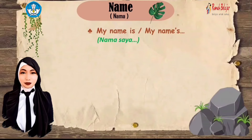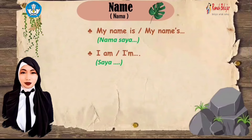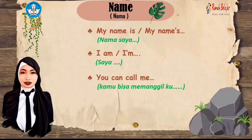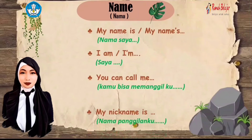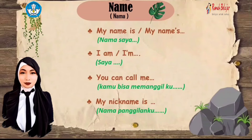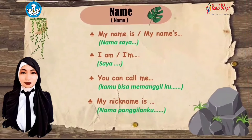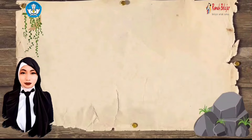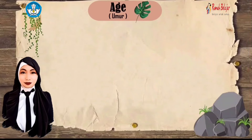Next, you can talk about your name. For example: 'My name is Jade' or 'My name's Jade.' You can also say: 'I am Jade' or 'I'm Jade,' 'You can call me Jade,' or 'My nickname is Jade' — meaning nama panggilanku Jade.